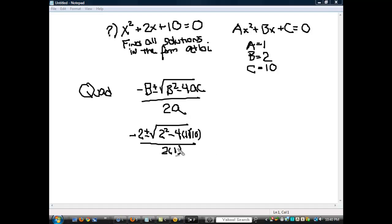So I'm just using the quadratic formula. This is 4 minus 40, which gives us negative 36 right there. So this is negative 2 plus or minus the square root of negative 36, all over 2.